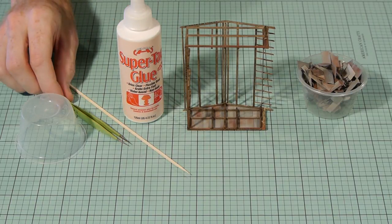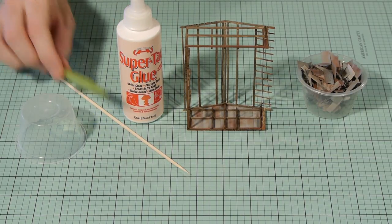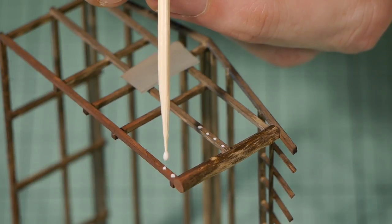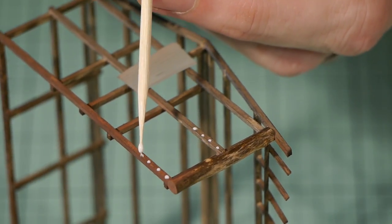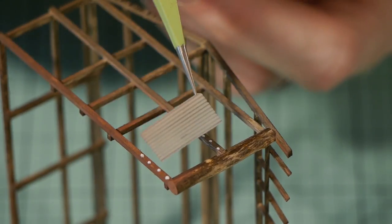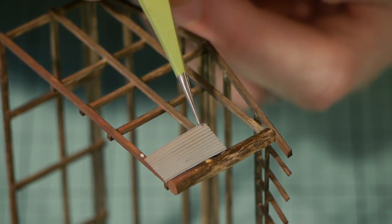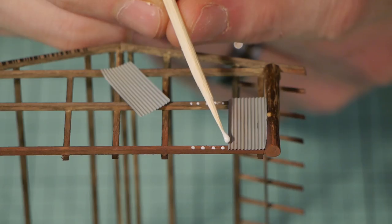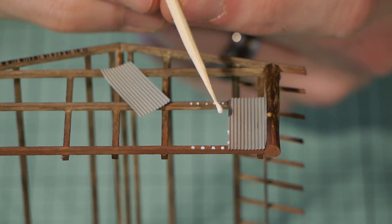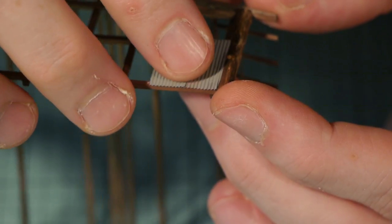And now for the most time consuming part, installing the corrugated iron. Good thing this is a small shed. It takes a massive amount of patience and concentration and a gentle touch but if you just take it one step at a time you'll have the shed covered before you know it. I did this over a couple of days.